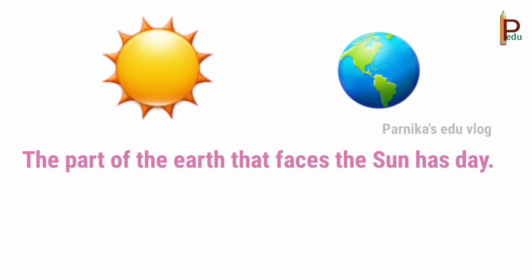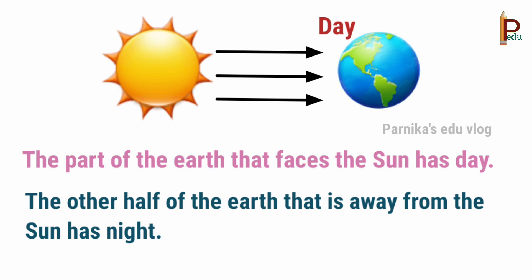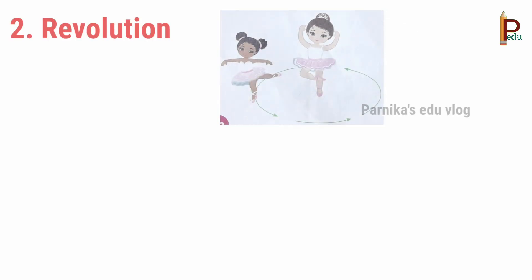The part of the Earth that faces the sun has day. The other half of the Earth that is away from the sun has night. So rotation of the Earth forms day and night.